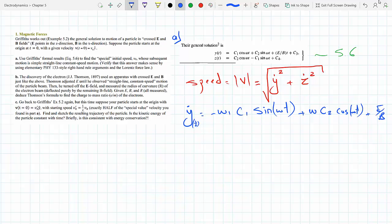And this is E over B. And then z dot - you differentiate z of t, so you get minus c2, minus omega c2, minus omega c1 cosine omega t. The constants have zero derivatives.